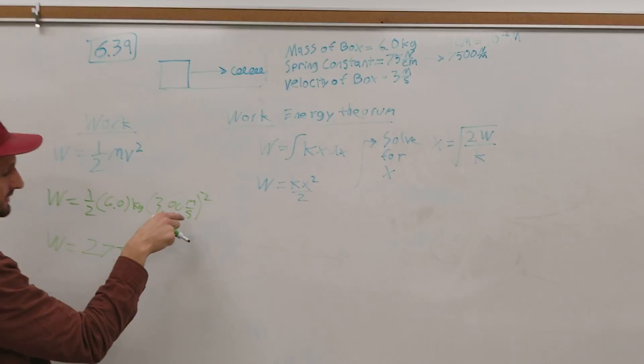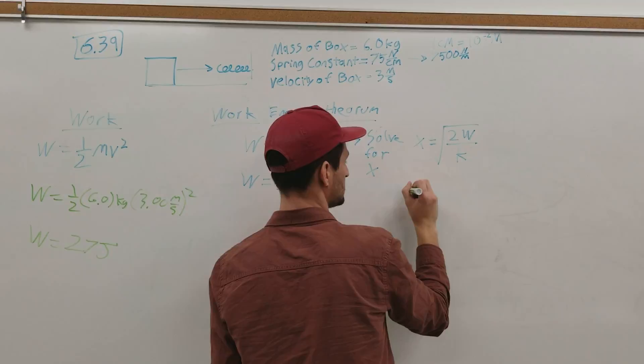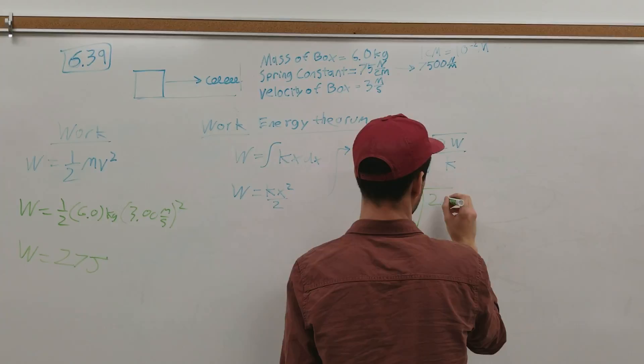So we plug this in over here to get our displacement, and that's going to be x equals 2 times 27 joules all over 7,500 newtons per meter.